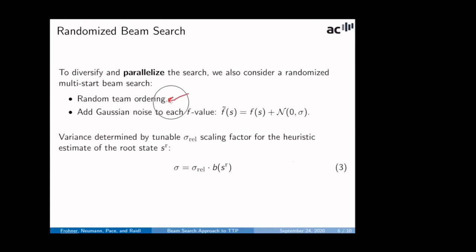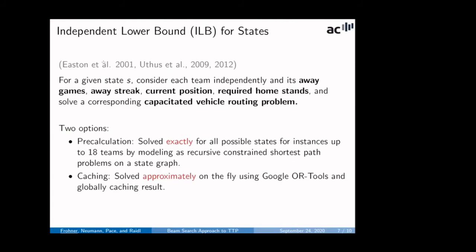So, how do we randomize and parallelize here? First of all, we shuffle the teams. So, in the state-based formulation, we have to break symmetry and set team ordering and just simply randomize here. And also, we add to this F value some Gaussian noise parameterized by some variance, relative variance value derived from the root state estimates here to get the orders of magnitude right. So, independent lower bounds are already introduced in the initial paper by Easton and others. And then explicitly stated for states by Uthus and others. So, the key is that we are given a capacitated vehicle routing problem that we have to solve given some states. That depends also on the away games, the streak, position, etc.